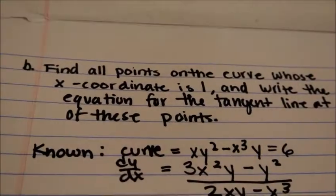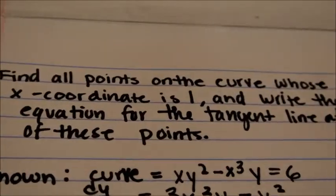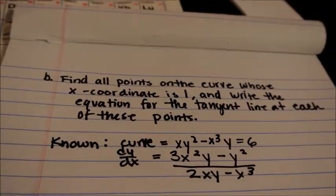Now, part B reads: find all points on the curve whose x-coordinate is 1, and write the equation for the tangent line at each of these points.